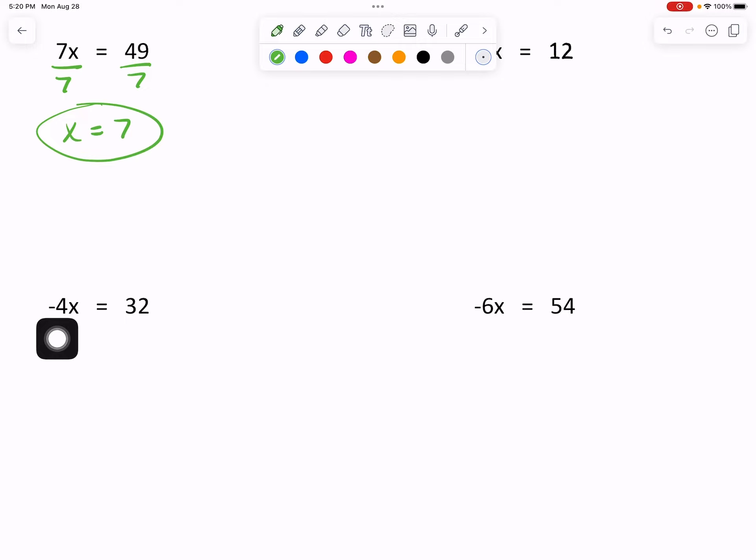So do we divide just by 4? No, make it negative 4. And what we do to one side? Yes, great job! Bring down your x equals 32 divided by negative 4 is negative 8.